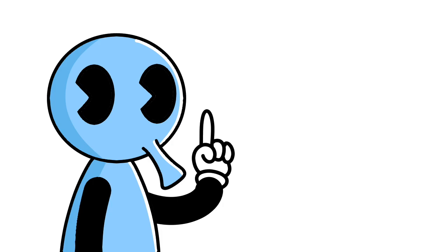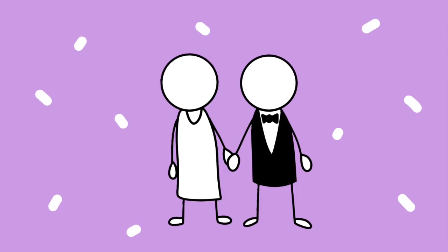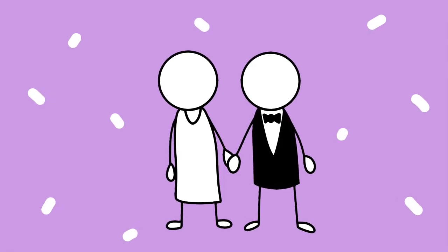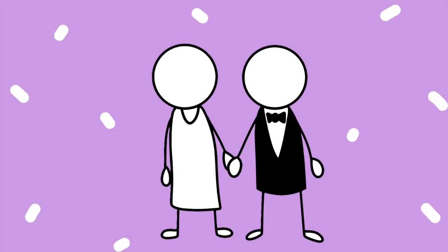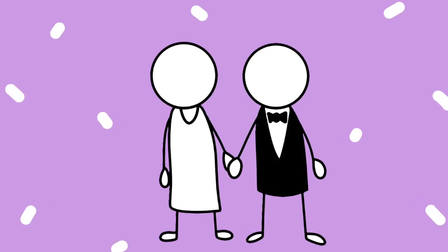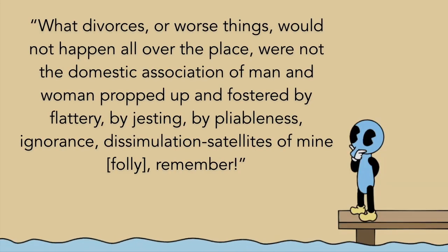Now Erasmus is going to take this further. We've established that folly helps us with friendships, but why would a marriage be any different? Wouldn't folly also help us overlook the flaws in our partner and therefore keep the marriage alive? What divorces, or worse things, would not happen all over the place?